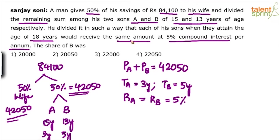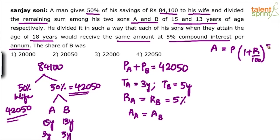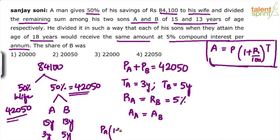What he says is the amount received is the same. When you put something in the bank, you get the total amount. So the amount received by A equals the amount received by B. The formula for amount is: Amount = P × (1 + R/100)^T. So amount received by A after 3 years equals amount received by B after 5 years: PA × (1 + 5/100)³ = PB × (1 + 5/100)⁵.